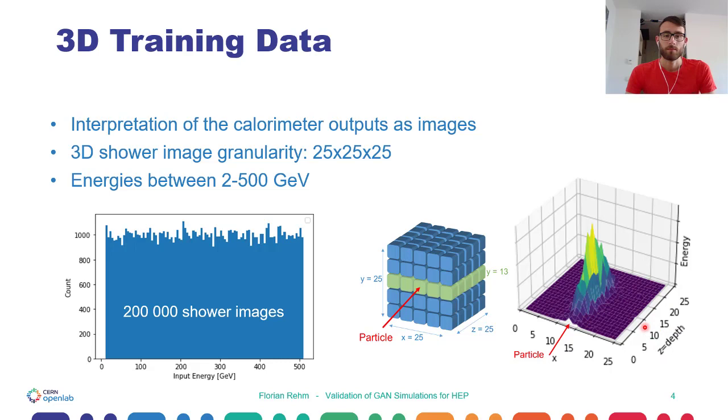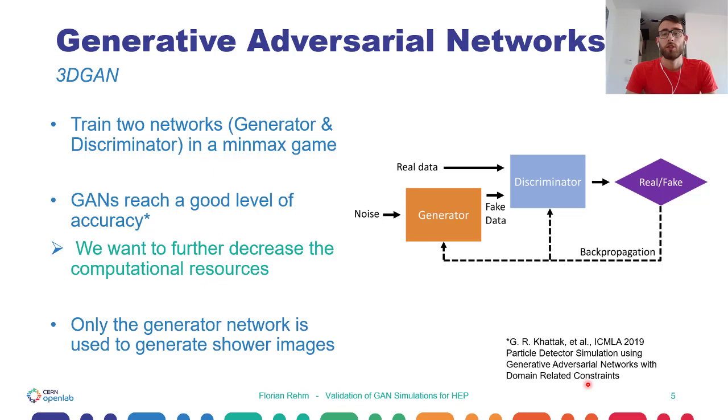The new simulation approach which we use for replacing the Geant4 simulations are generative adversarial networks, or short GANs. Because our training data is three-dimensional, we name our model 3DGAN. The whole GAN model consists of two neural networks: the generator network which generates the fake data, and the discriminator network which gets as input the real data, the training data which I showed you on the slide before, and the fake data from the generator.